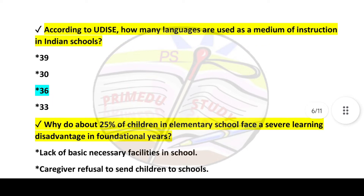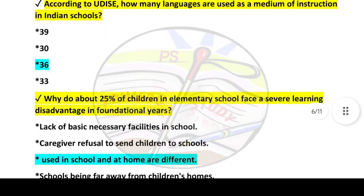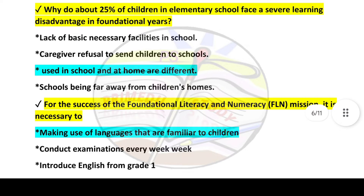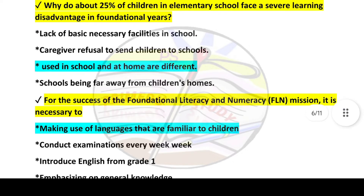Next question: According to DISE, how many languages are used as a medium of instruction in Indian schools? Answer is option number three: 36. Next question: Why do above 25 percent of children in elementary school face a severe learning disadvantage in foundational years? Answer is option number three: languages used in school and at home are different.